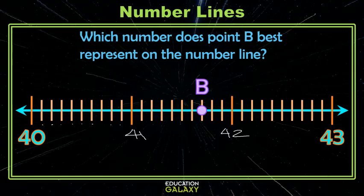Since there are 10 spaces between 41 and 42, each space is a tenth. So this next tick mark is 41 and 1 tenth, 41 and 2 tenths, 41 and 3 tenths, 4 tenths, 5 tenths, 6 tenths, making point B at 41 and 7 tenths.